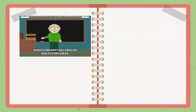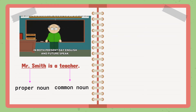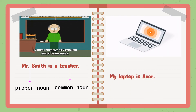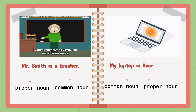Next example: Mr. Smith is a teacher. Mr. Smith is an example of a proper noun because Mr. Smith is a specific name for a person. While teacher is an example of a common noun — teacher is a general name for a person. Laptop is an example of a common noun, and Acer is an example of a proper noun. Acer is a specific name of a thing, and laptop is a general name of a thing.